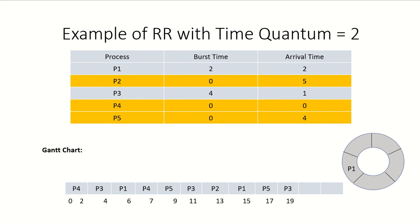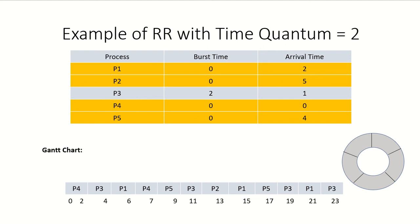P3 runs from seventeen to nineteen with two time units remaining. After P3, P1 is given the processor and P3 joins the ready queue. P1 runs from nineteen to twenty-one, completing its burst time. Now only P3 remains and it runs from twenty-one to twenty-three, also completing its burst time.